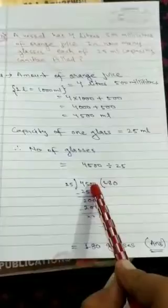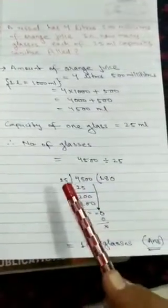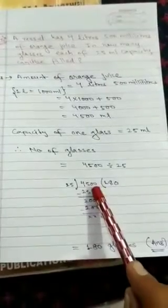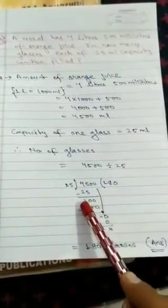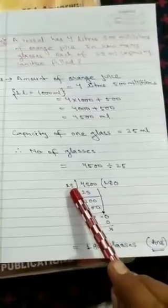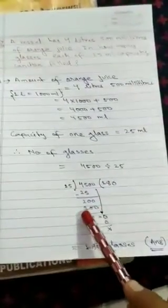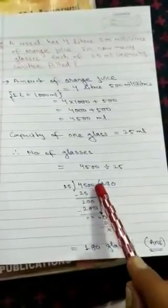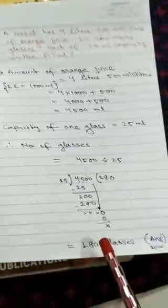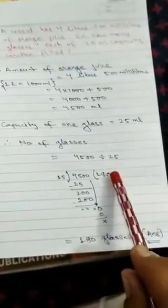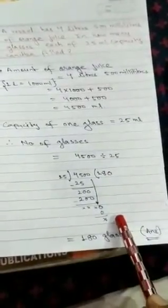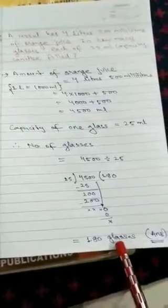Now 4500, when you divide by 25, 25 ones are 25, after subtraction, you will get 20. 0 will come down, it is becoming 200. 25, 8 times, 200. After subtraction, you will get 0. Again, the last 0 will come down. 25 into 0 is 0. Therefore, you are getting 180 as quotient. Remainder is 0. Therefore, answer will be 180 glasses.